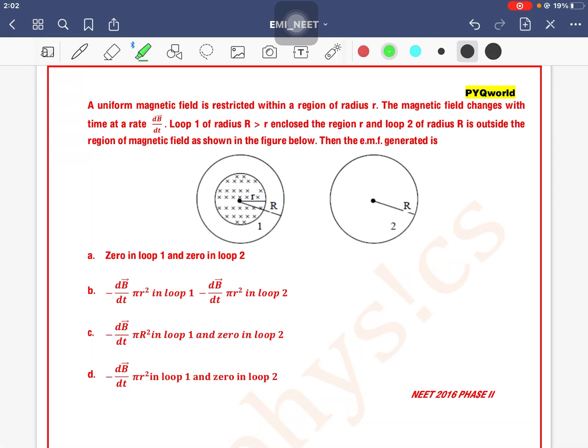A uniform magnetic field is restricted within a region of radius r. The magnetic field changes with time at a rate dB/dt. Loop 1 of radius r is enclosed within the region, and loop 2 of radius R is outside the region of magnetic field as shown in the figure. Then the EMF generated is...